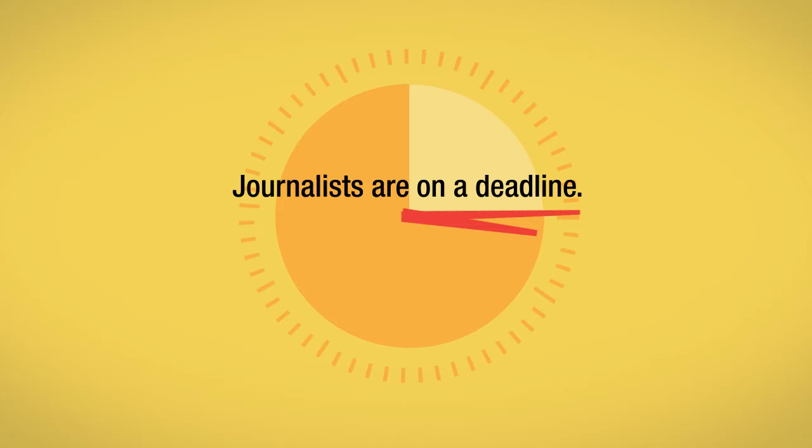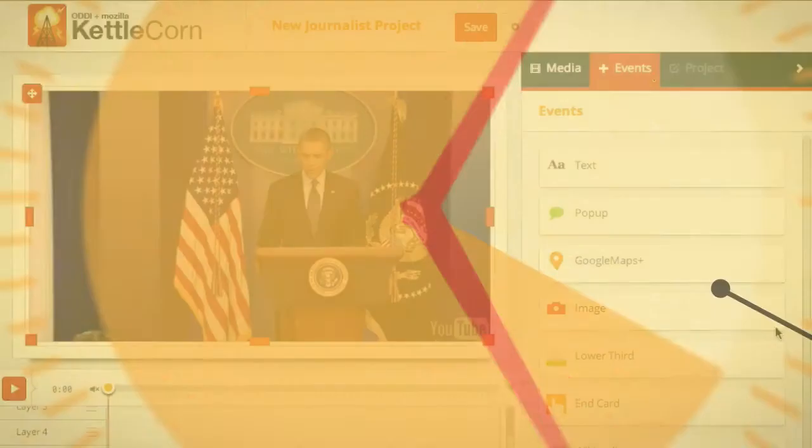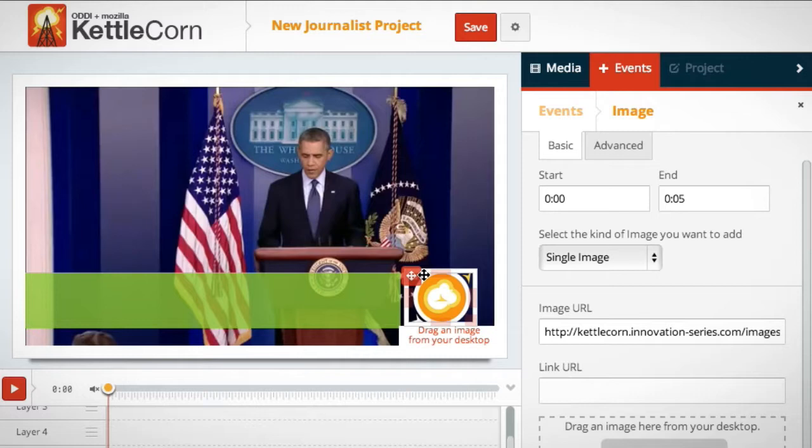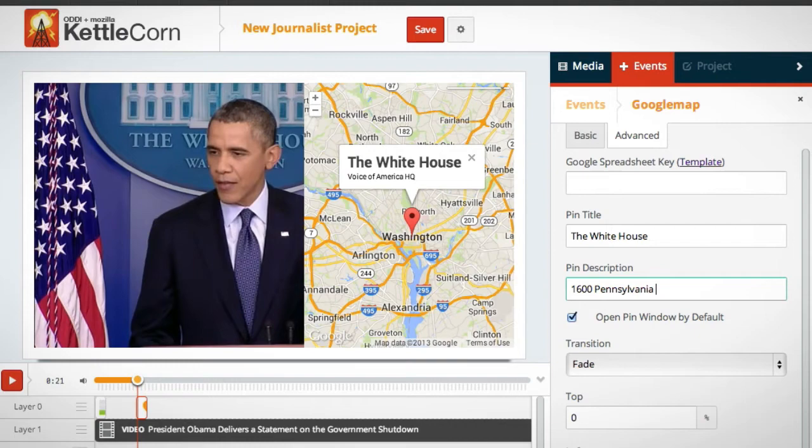Journalists are on a deadline, so our first goal was to reduce the time to publish new projects by improving the editor and creating plugins that simplify the most common tasks. Instead of stacking and positioning layers of images and text on the timeline, journalists can insert a plugin to quickly create lower thirds or create a simple end card with links that promote related stories.